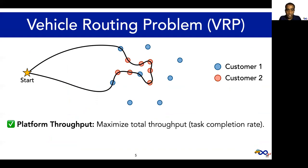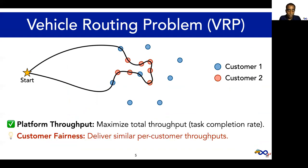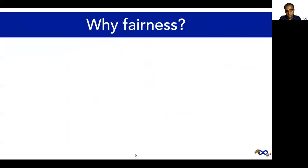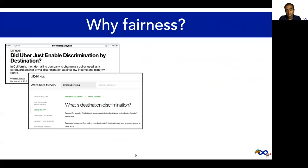Mobility platforms today seek to maximize the platform throughput or task completion rate. In this work, we identify a second equally important scheduling requirement, which has emerged from these customer-centric mobility platforms. In addition to delivering high throughput, mobility platforms must ensure that customer throughputs are similar. Optimizing solely for platform throughput can cause some customers, like restaurants on food delivery platforms or neighborhoods on ride-sharing platforms, to experience poor throughput because their tasks are inherently harder to complete. Uber calls this phenomenon destination discrimination.